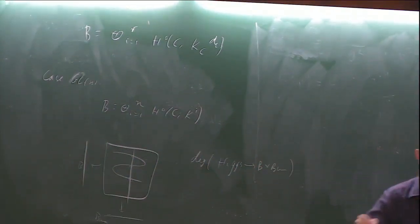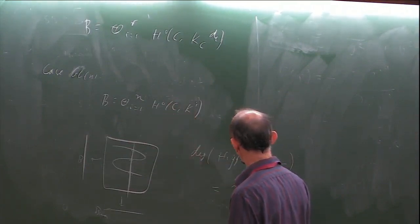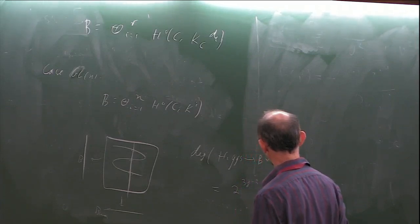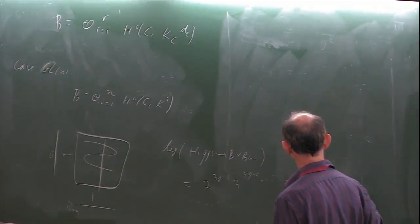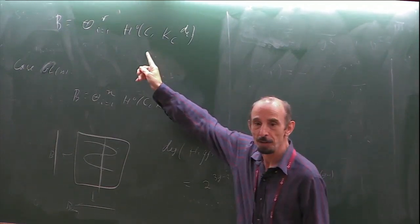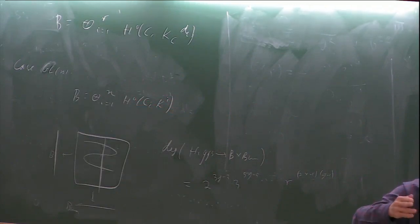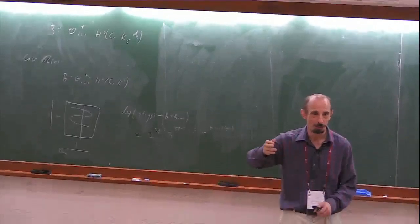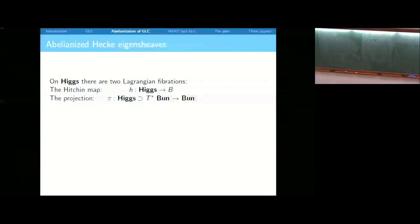The number of intersection points equals the degree of the map from Higgs to B cross Bun: take a point in B and a point in Bun, and ask how many points map to both. In the case of GL_N it's going to be 2^(3g-3) times 3^(5g-5) up to R^(2R-1)(g-1). You get this by fixing a point in the base — that fixes g linear functions, 3g-3 quadratic functions, 5g-5 cubic functions, and so on — and asking how many intersection points there are. It's the product of the degrees, by Bezout.